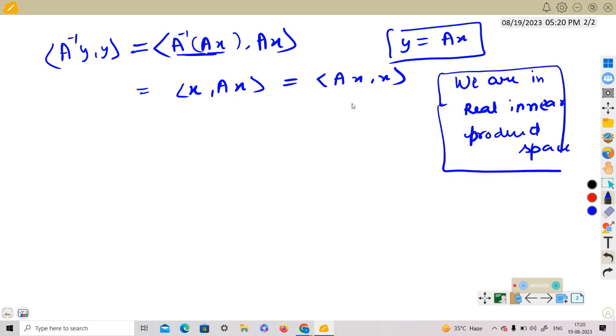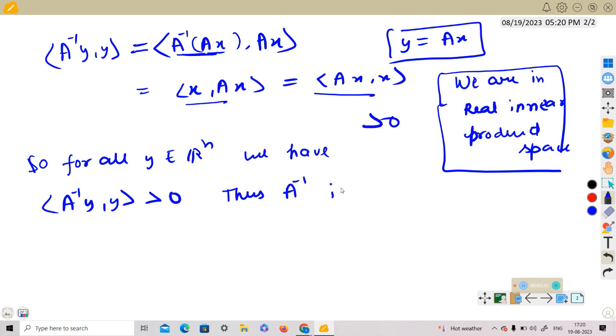So what happens is <x, Ax> equals <Ax, x>, and we know this is positive. So for all y belongs to R^n, we have <A^(-1)y, y> is greater than 0. Thus A^(-1) is a positive definite matrix.